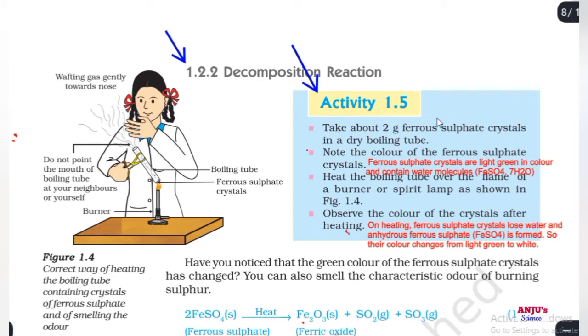Take 2 grams of ferrous sulfate crystal in a boiling tube. Note the color of the ferrous sulfate crystal. We have to note the color of ferrous sulfate before boiling.